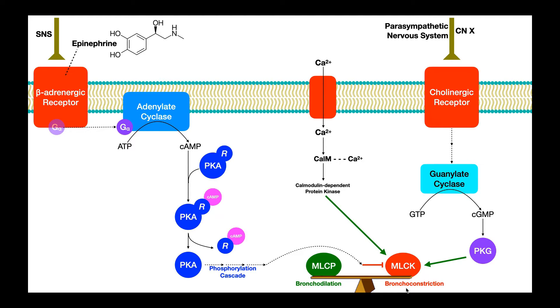In contrast, bronchoconstriction is favored by the parasympathetic nervous system. And so this is going to be the rest and digest. This is where you're sitting, relaxing, watching your favorite show on Netflix. And so you don't need as much air going into your lungs.